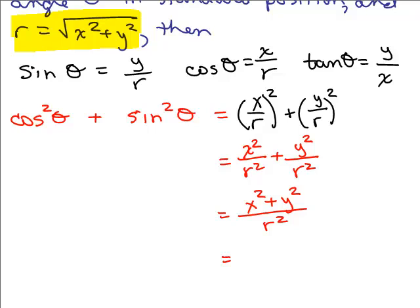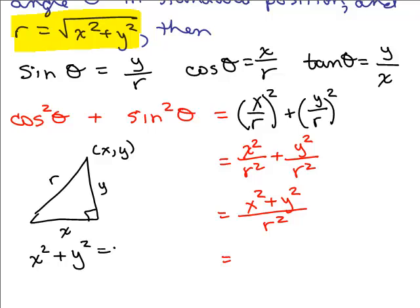If this is your point xy, and this was r, it's because we have an x and a y, and the Pythagorean theorem says x squared plus y squared equals r squared. That's why r is the square root of x squared plus y squared. So this x squared plus y squared is really the same thing as r squared. So I really just have r squared over r squared, which equals 1.